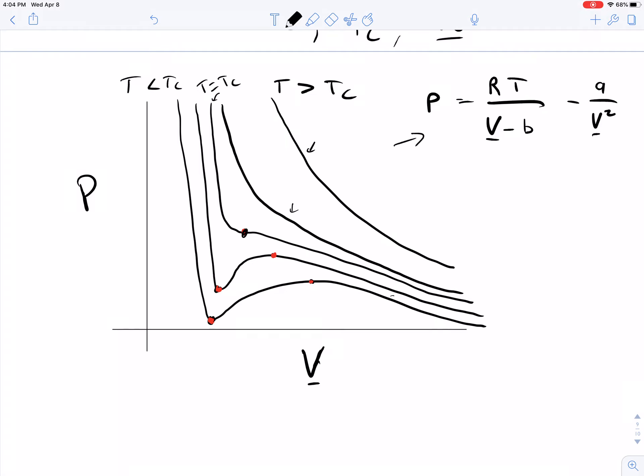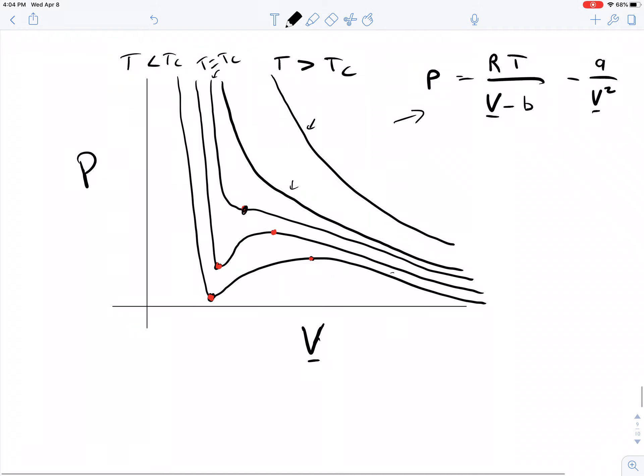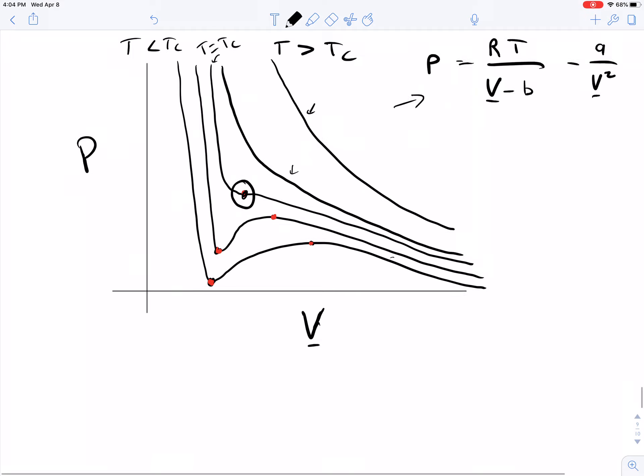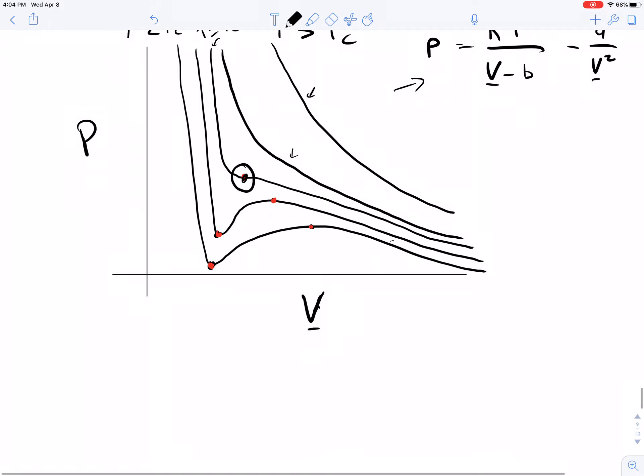This is representative of the Van der Waals equation of state. We talked a little bit about the weird behavior in the previous video, but we're going to focus on one point right here. This is the transition point, where the behavior switches from having one state to having more than one state.